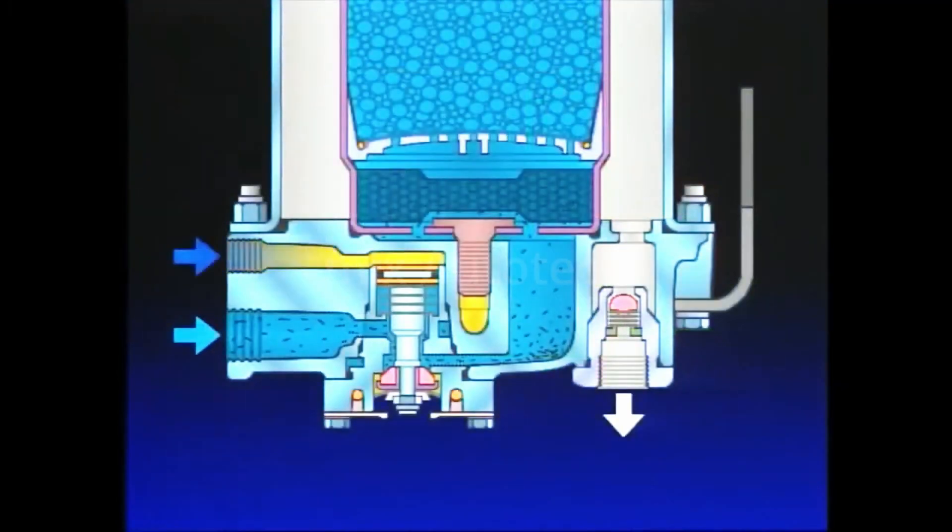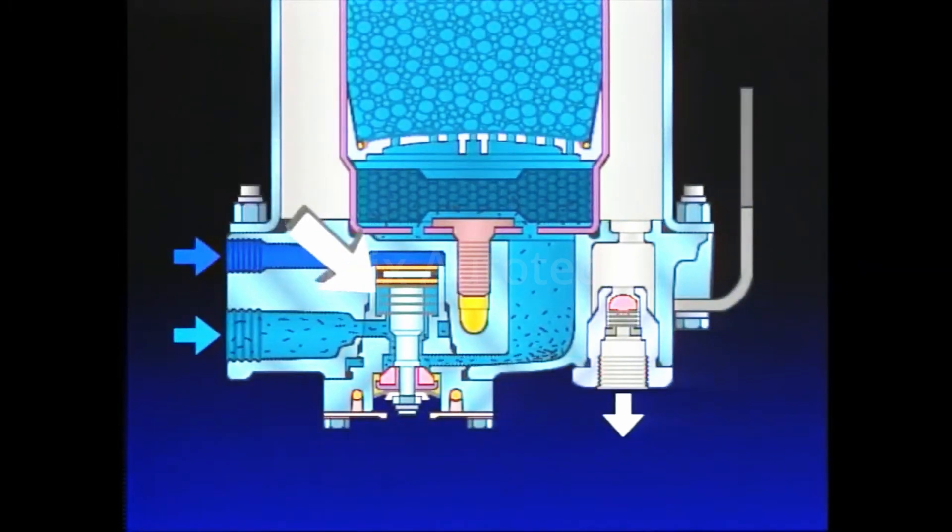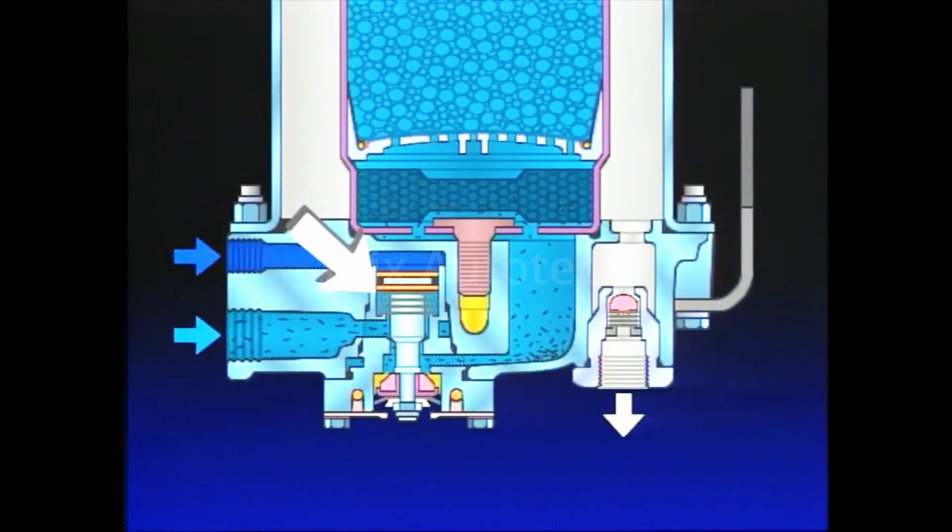Air from the governor enters the control port of the air dryer, moving the purge valve piston. The turbo cutoff seals the inlet port and opens the purge valve.